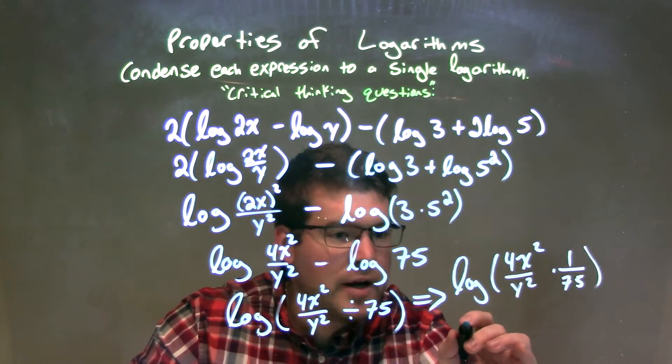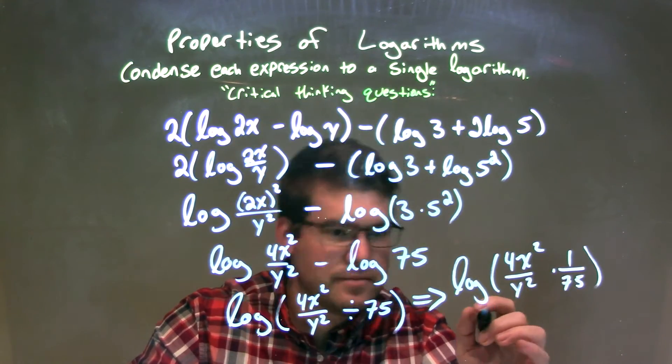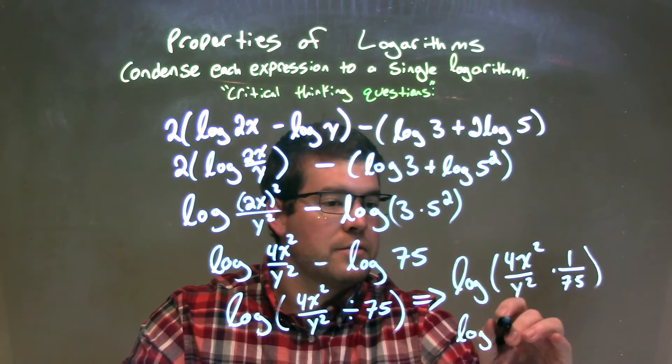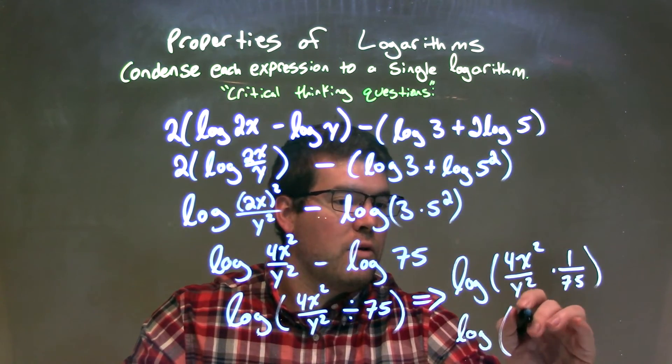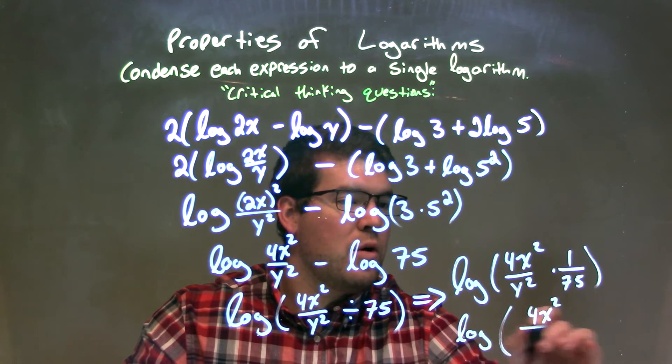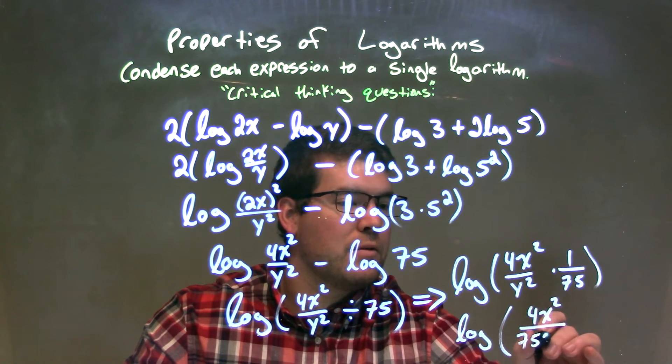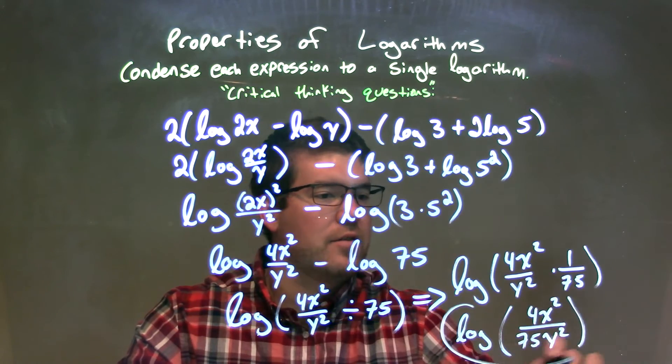And so that I can rewrite right here to be one big expression, log of, okay, well, 4x squared over 75y squared. And there we have it, our final answer here.